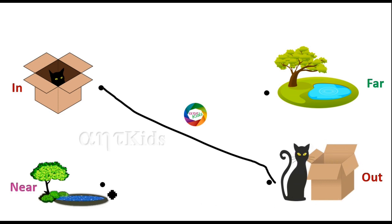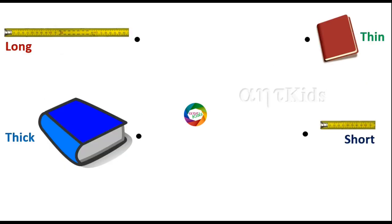Near, far. Tree is near the pond. Here the tree is far from the pond. Long, short, thick, thin.